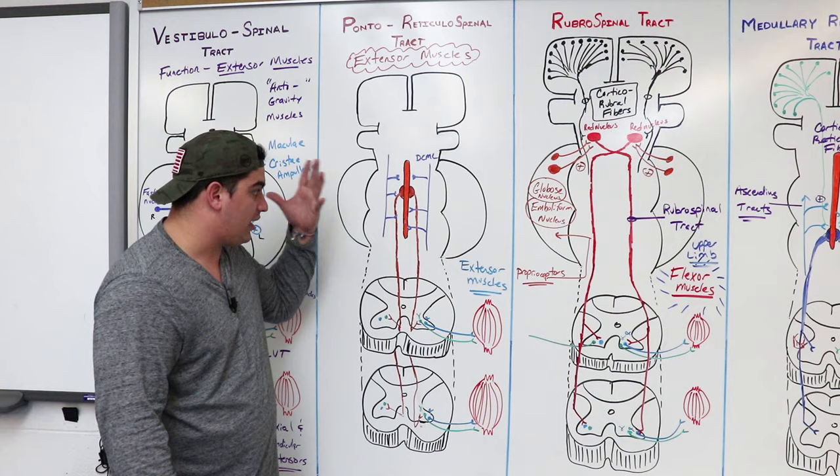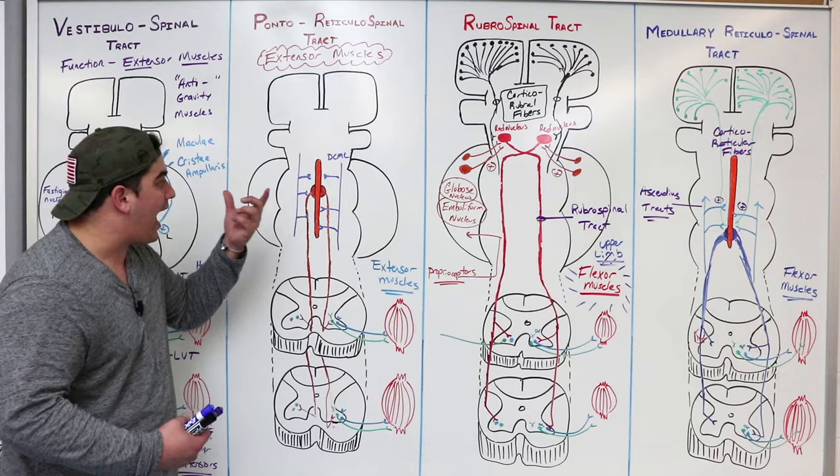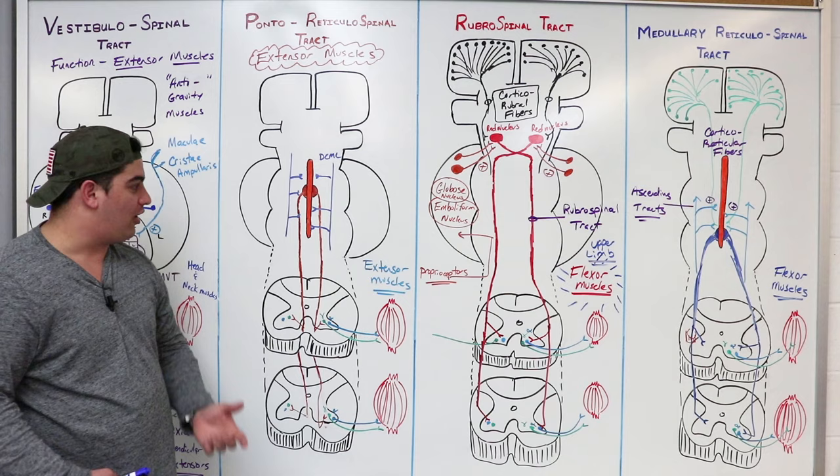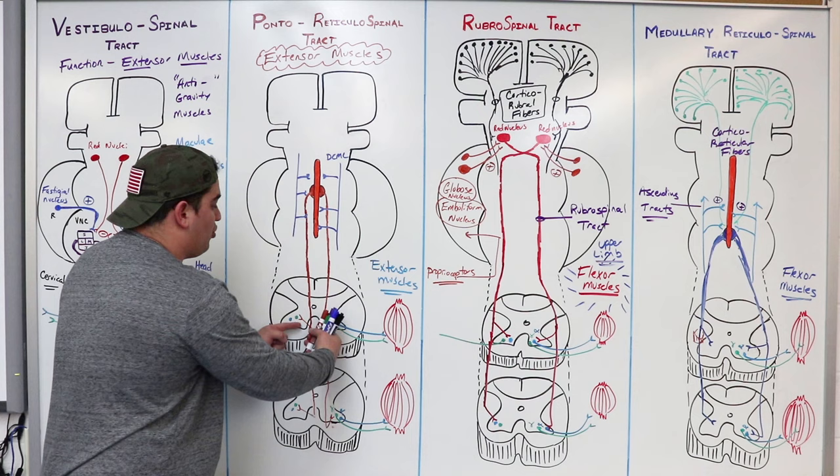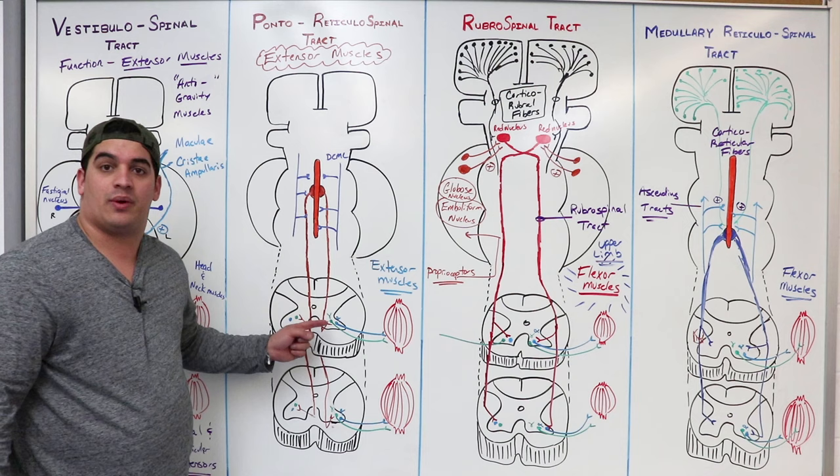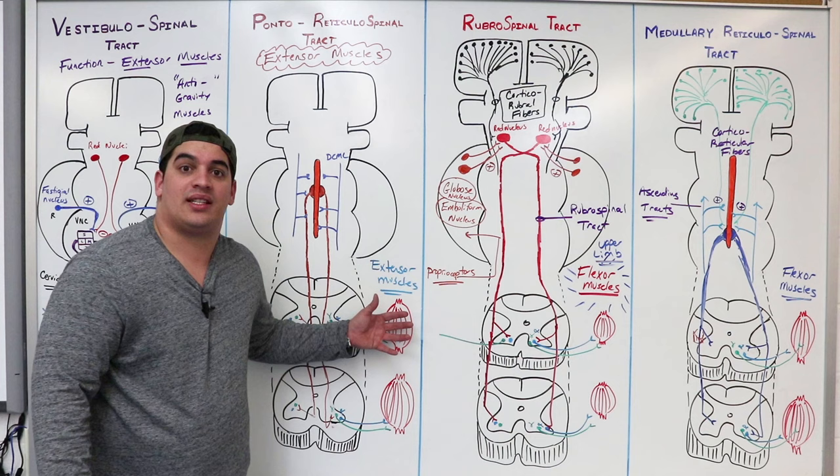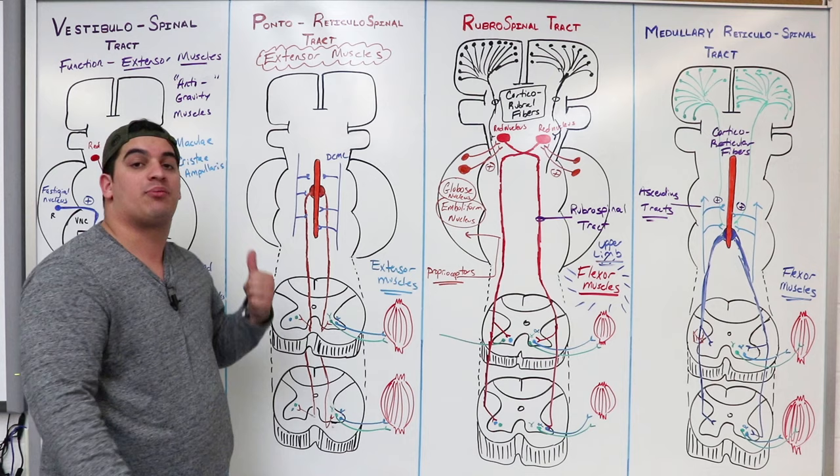The pontoreticulospinal tract, what did we say? It goes to the extensor muscles. Simple as that. Where does the nuclei originate? It's in the pons. It's a part of the reticular formation. What is it doing? It's sending down descending fibers via the pontoreticulospinal tract into what? Into the anterior ventral white column. Where is it going? It's going to alpha and gamma motor neurons within the anterior or ventral grey horn. What are they going to? Extensor muscles. These extensor muscles are important to be able to contract and help to assist the vestibulospinal tract.